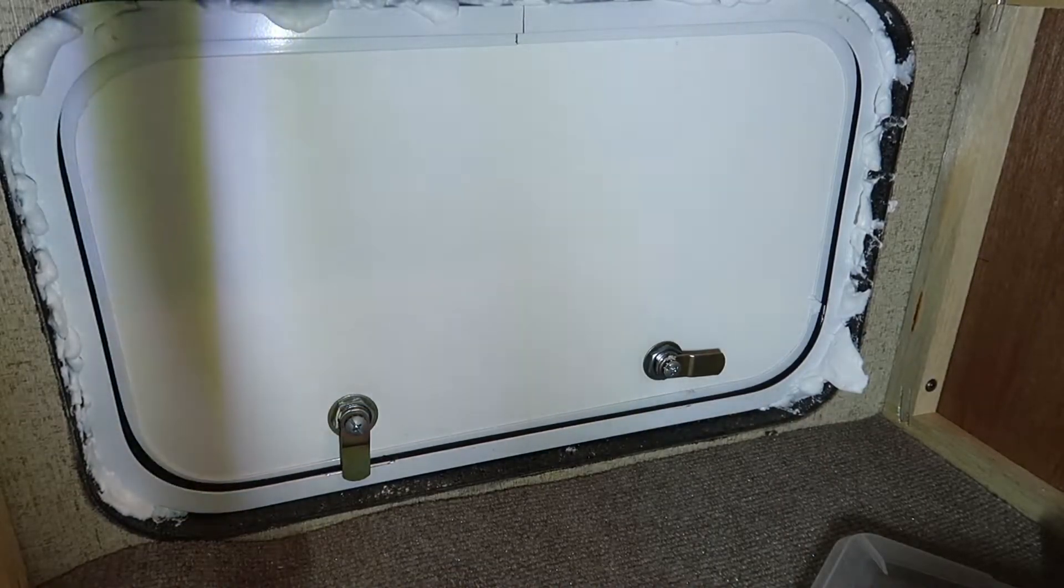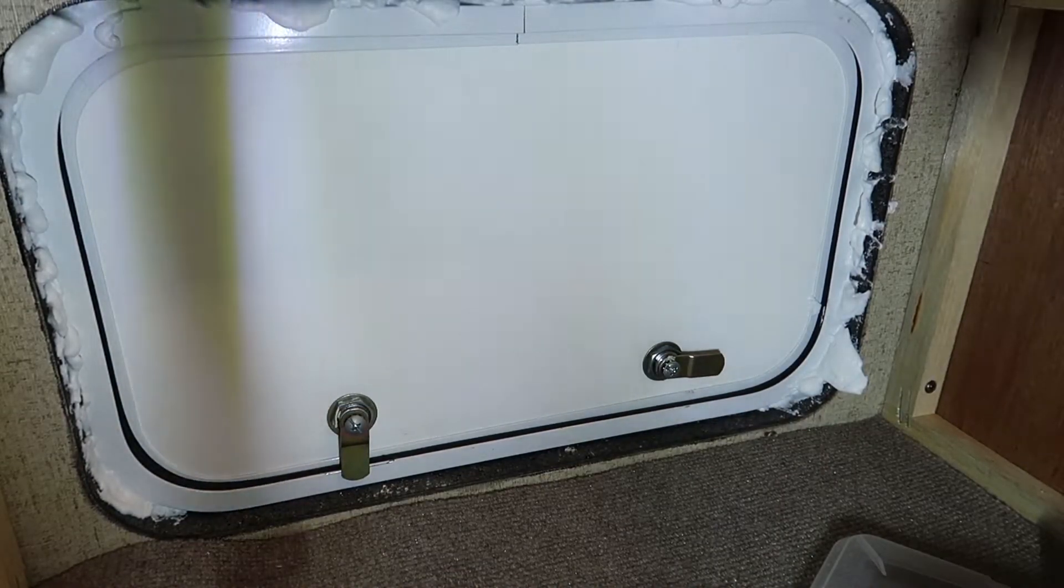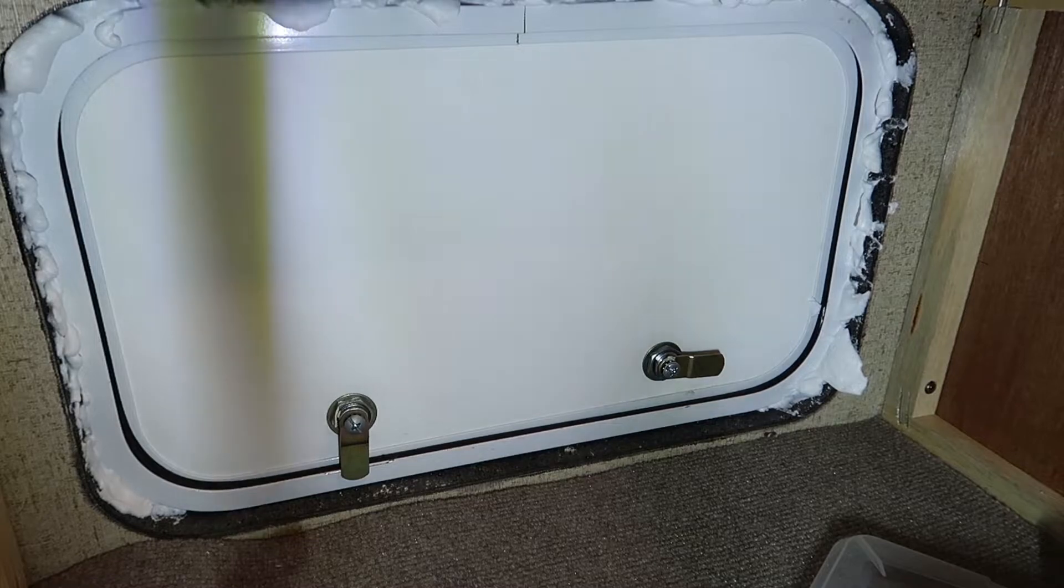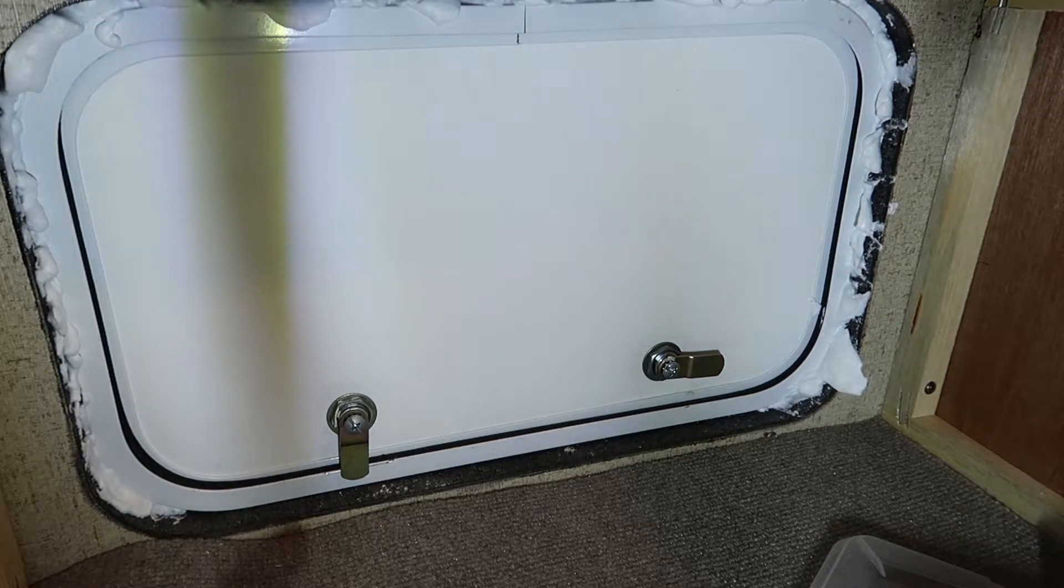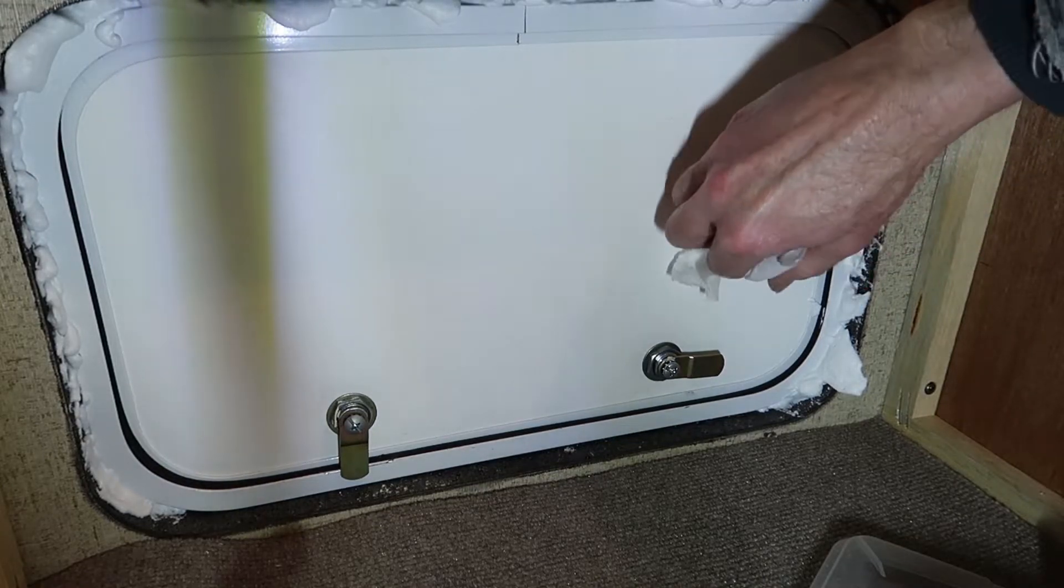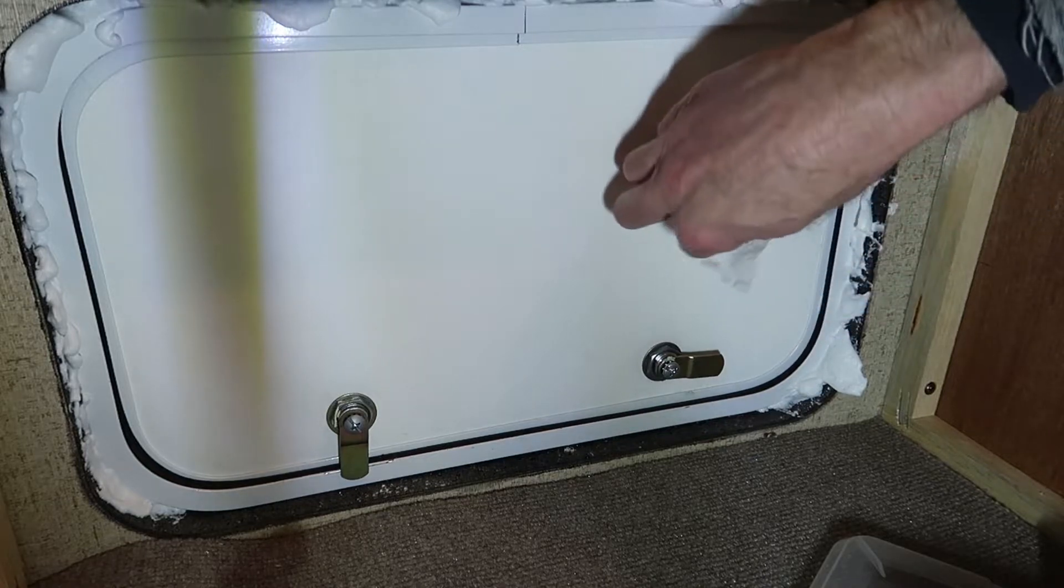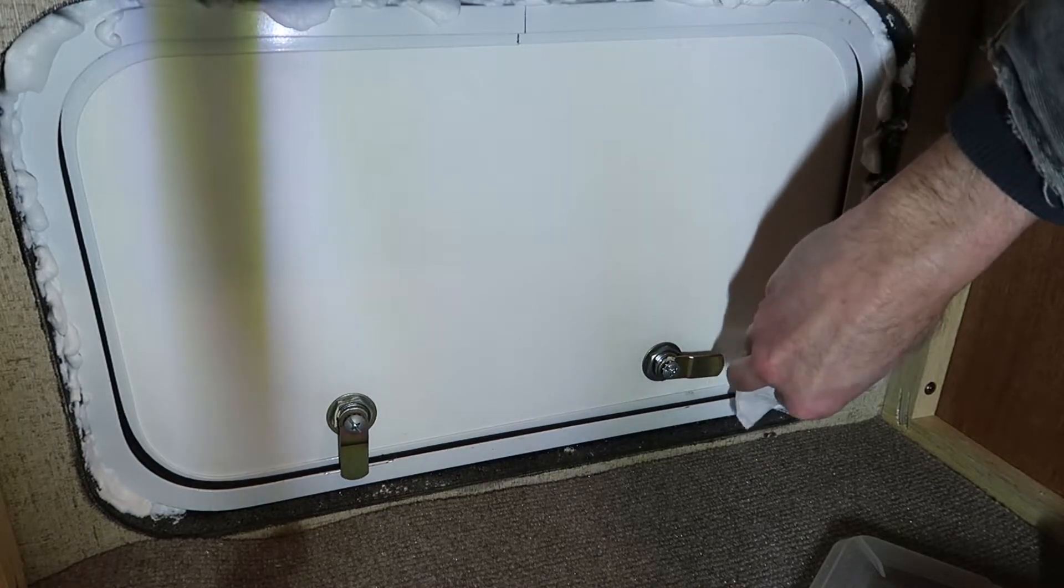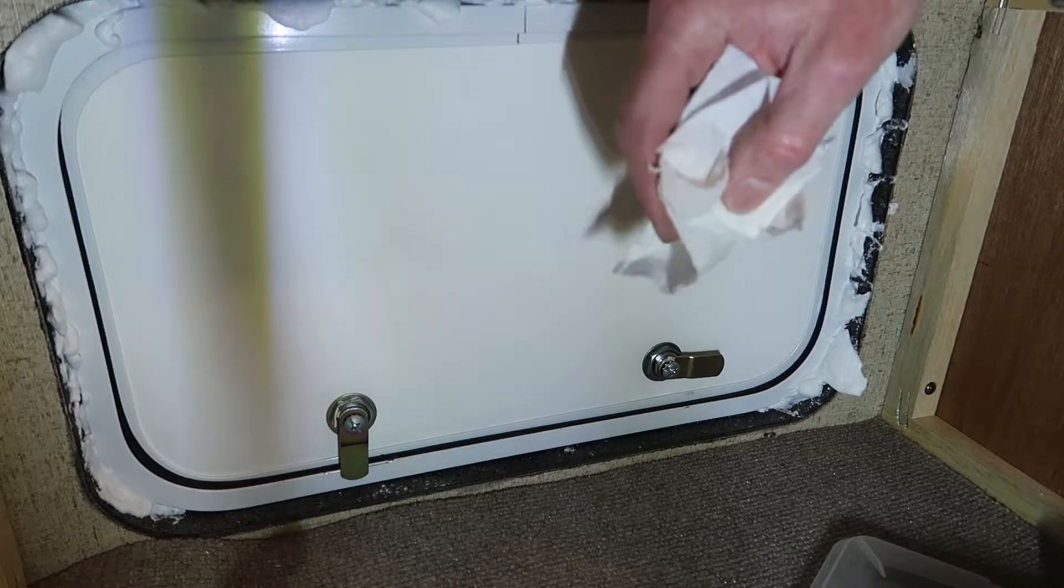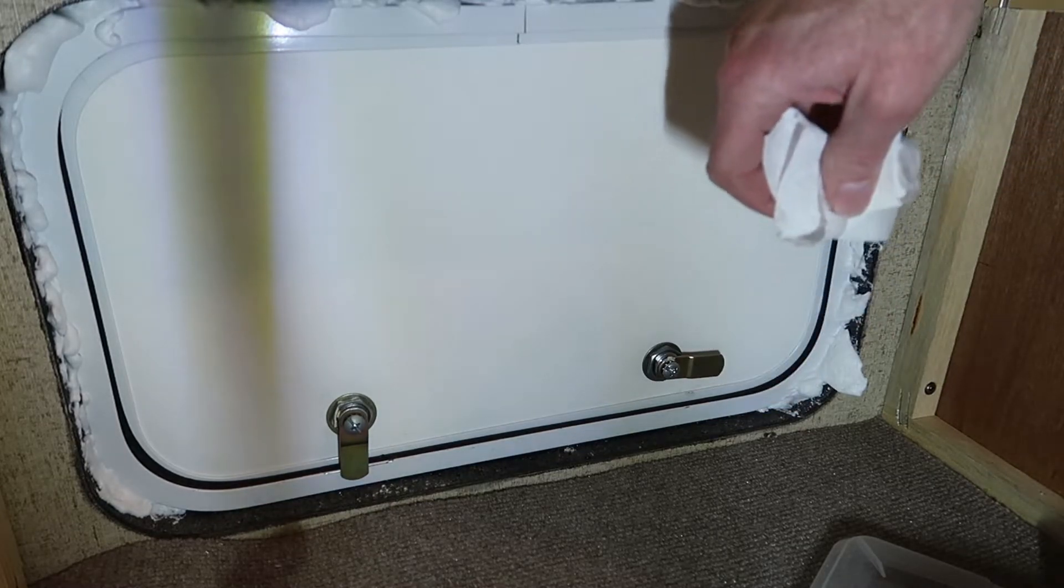This is looking under the dinette bench at a door that is used to access the under-dinette storage area. What I've done is taken some spray foam and filled in a gap between the hole in the wall and the framing of that door. And once I smoothed out the foam, it looked pretty decent and wasn't quite so messy looking.